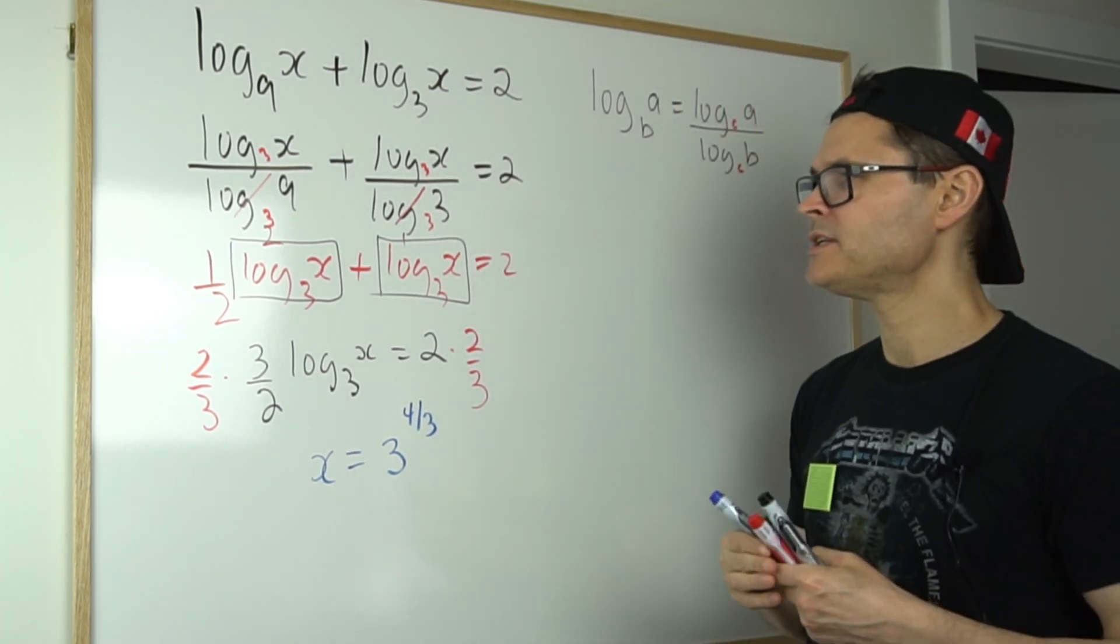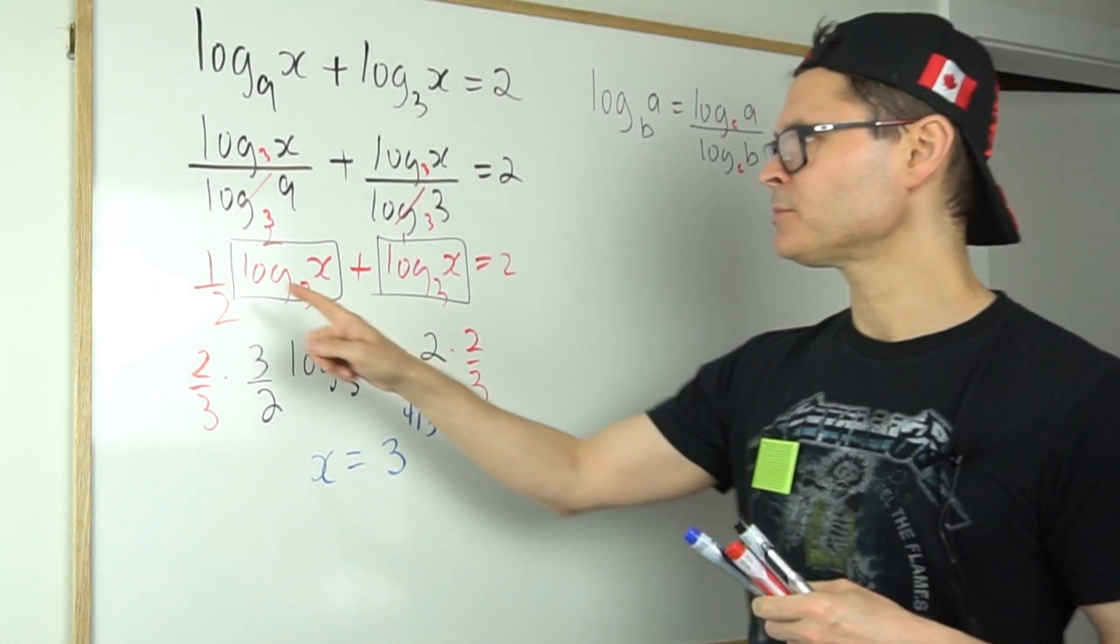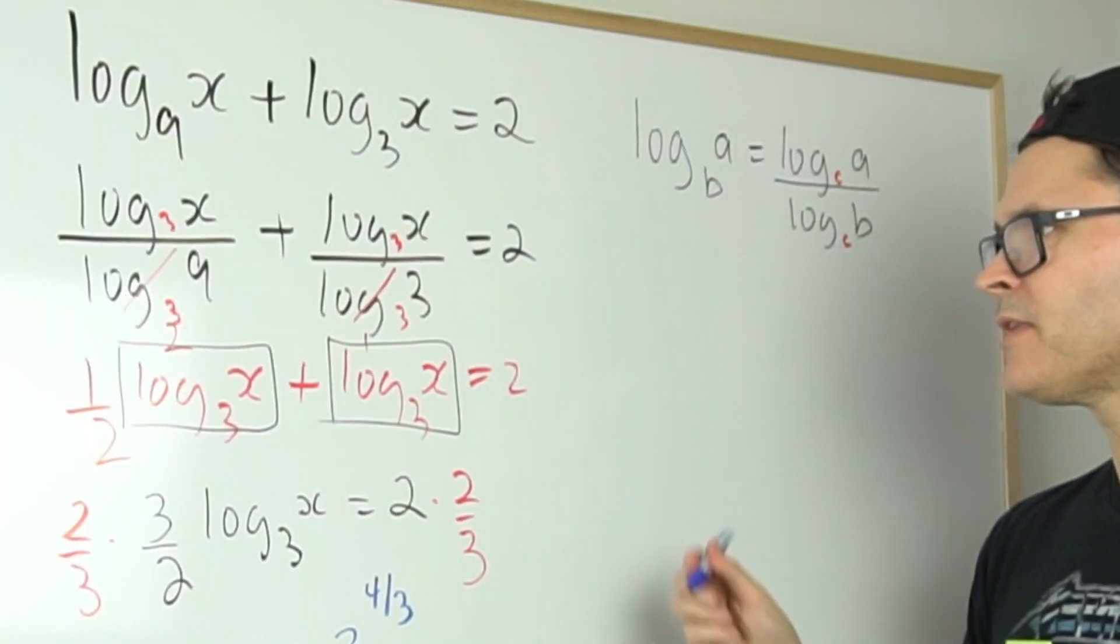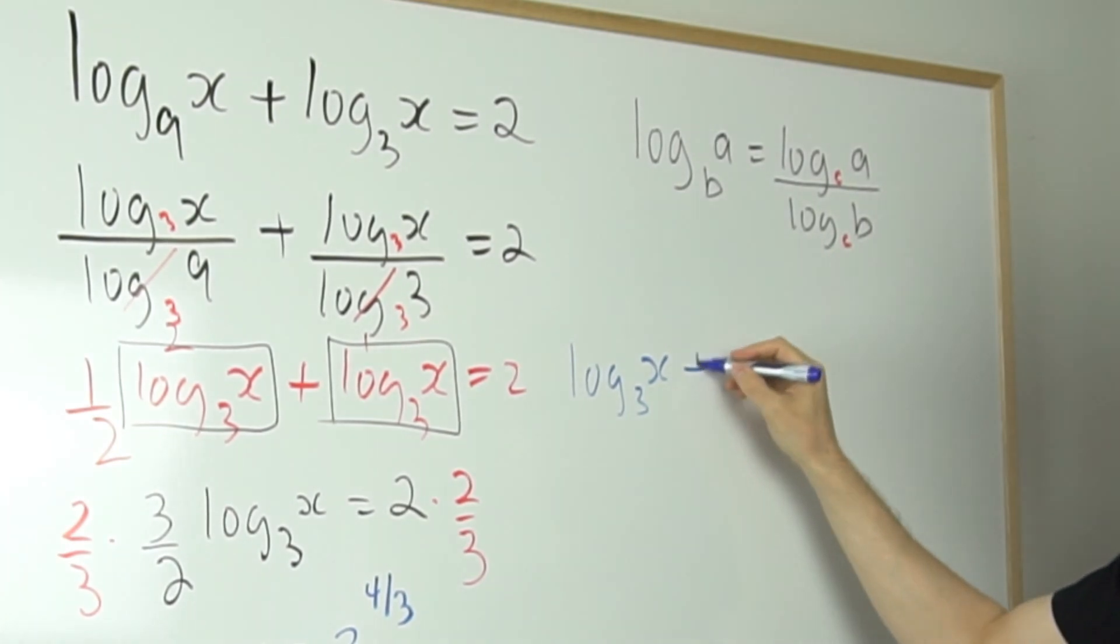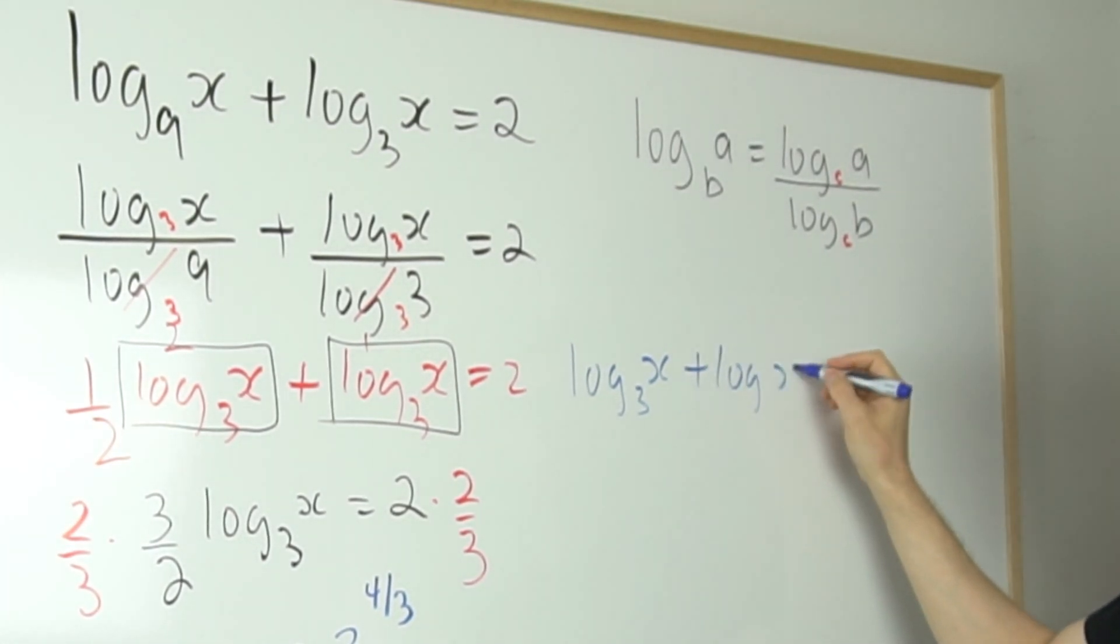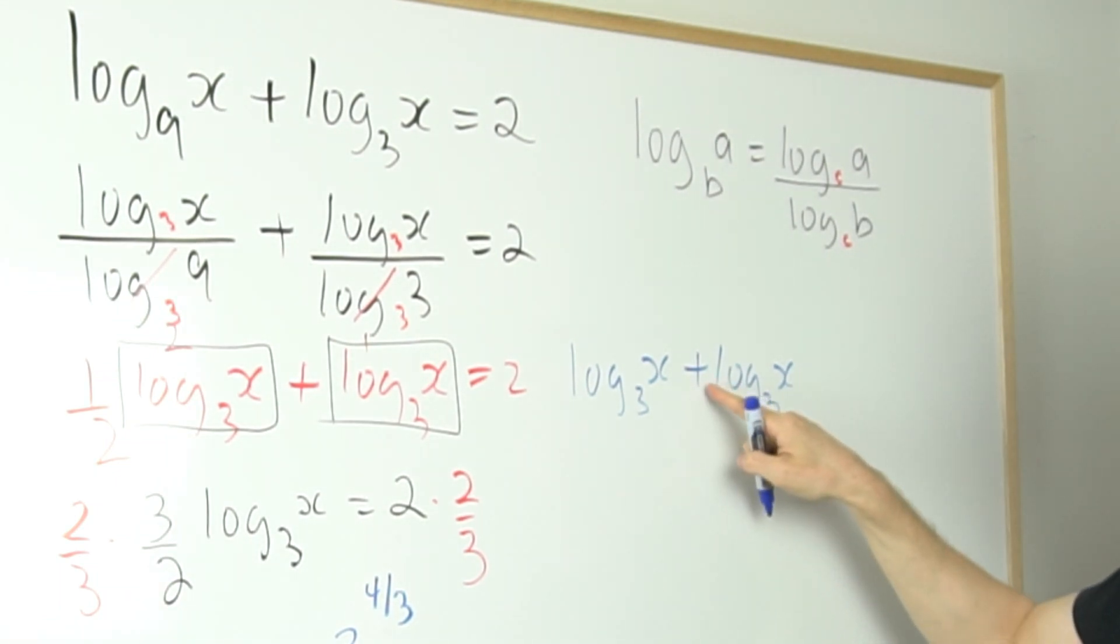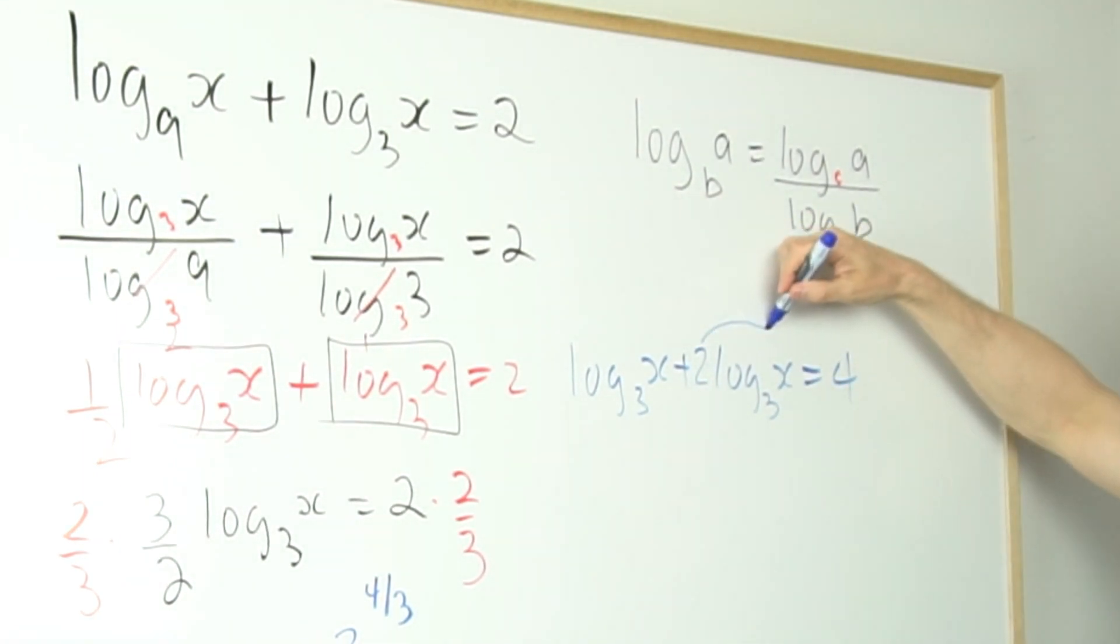I could have gone a different route here. If I had multiplied through by two, that would have given me at this stage the log of x base three plus log of x base three. What I'm going to do, well let me just erase this, I'll put the two there. There should be a two in front of that equals four.